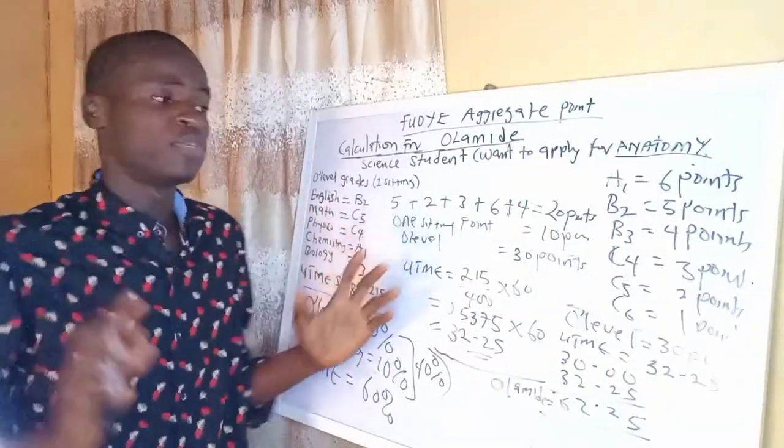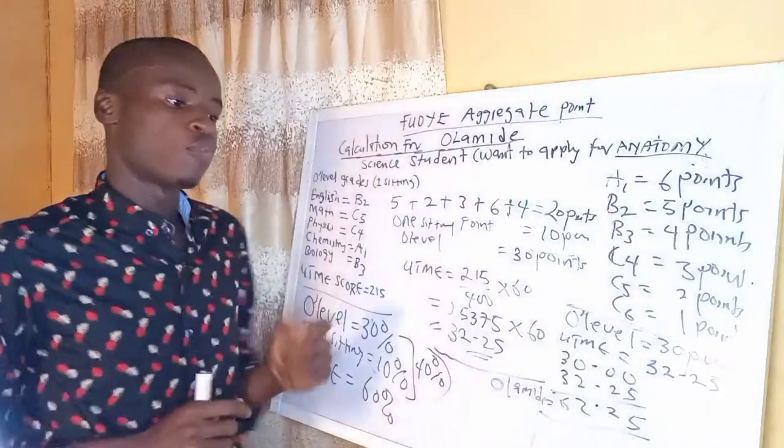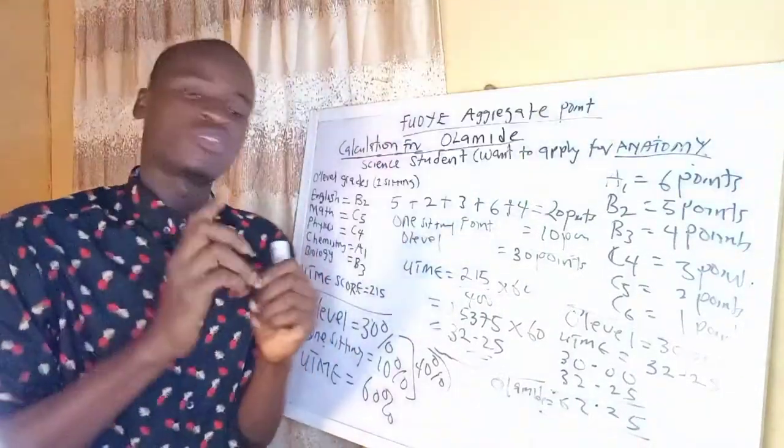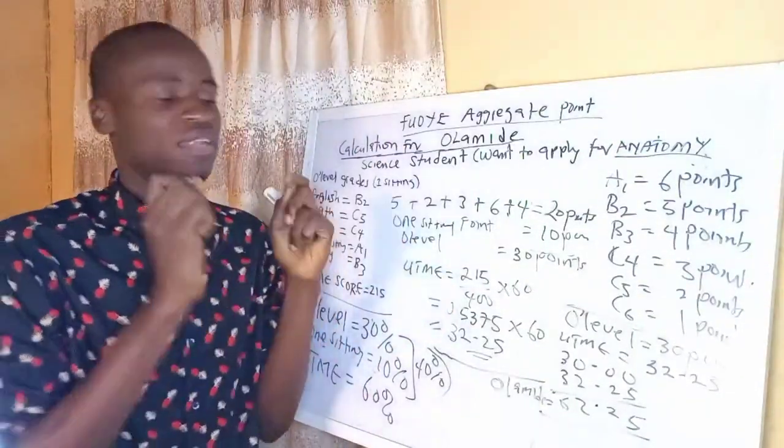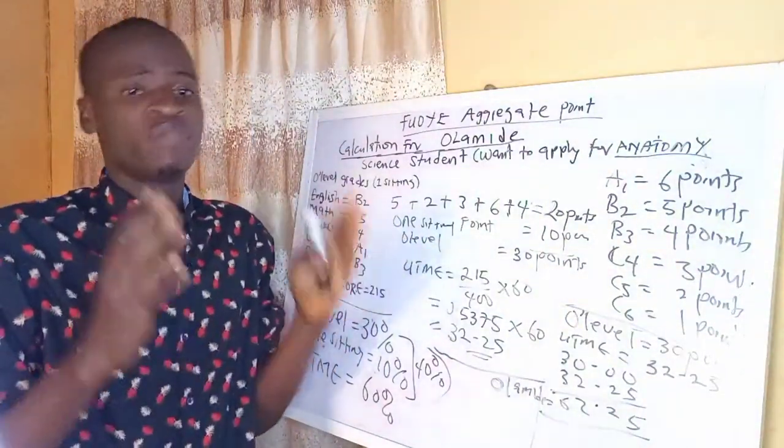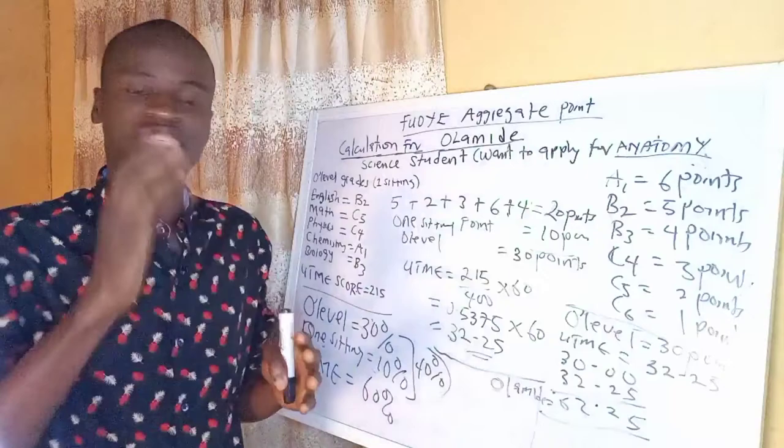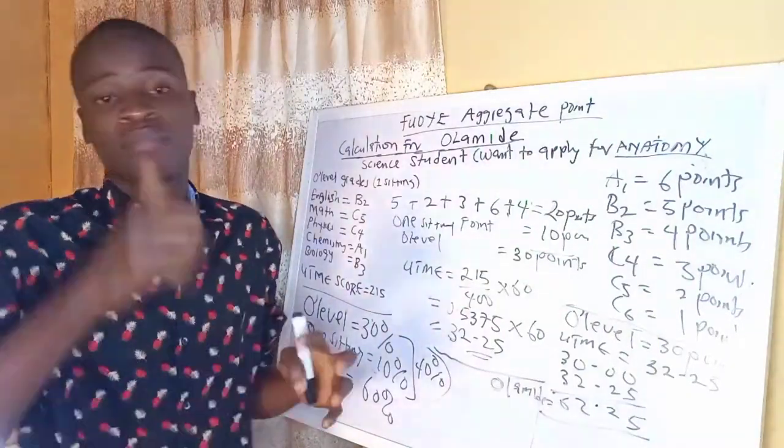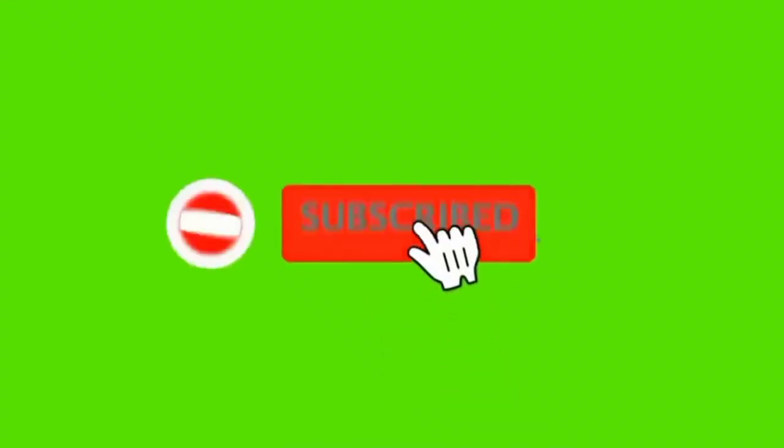And this is just simply how to calculate four-year aggregate point. If you have any question, feel free to use the comment section below and I will attend to your question. Don't forget to subscribe to this channel once again and also like this video. You can also check some of the videos we have made on this channel. See you in another interesting video like this. Bye for now.